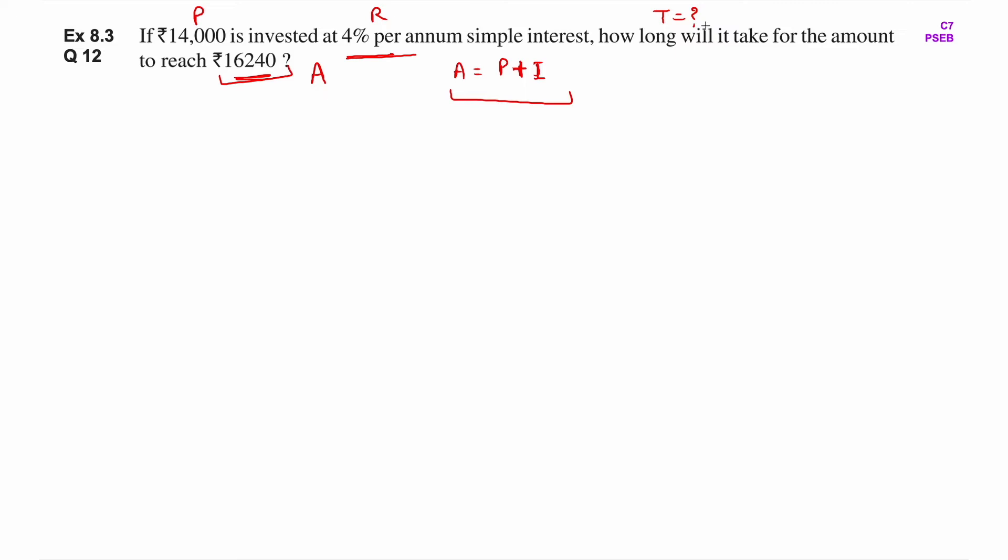So in this question we need to find T. A is given to us. Principal amount is also given. From here we will find the value of I. Then we'll put the I value into the interest formula and find the T value. To solve this question, we'll need two formulas.